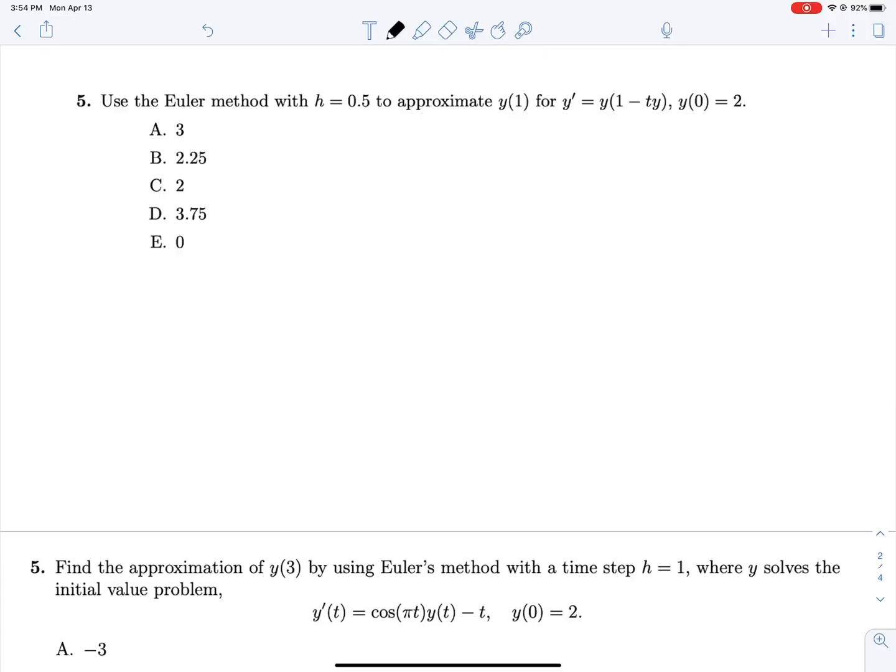Five, let's use Euler's method with h equals 0.5 to approximate y at 1 for y prime equals that right there, given that y at 0 is equal to 2.